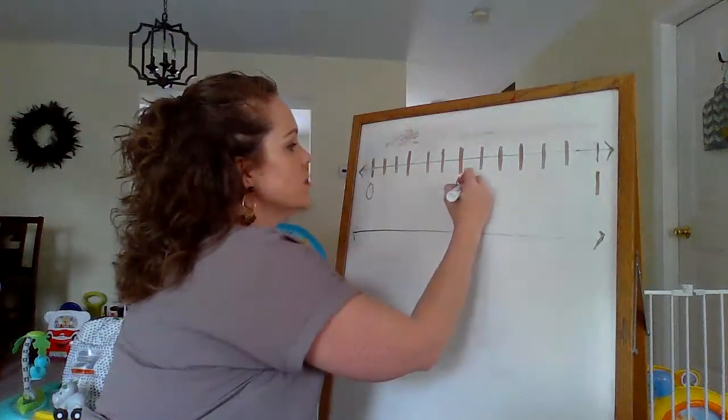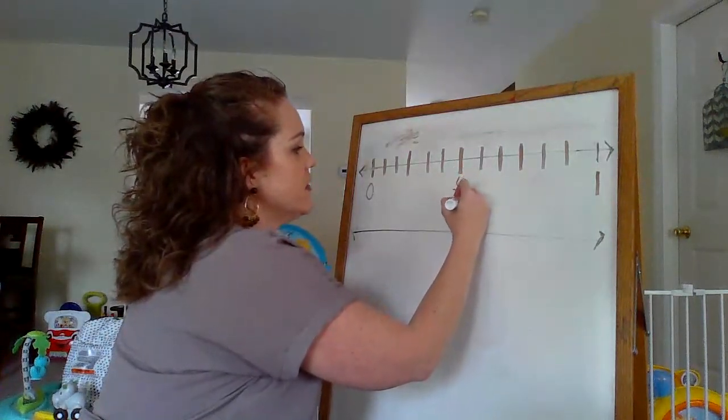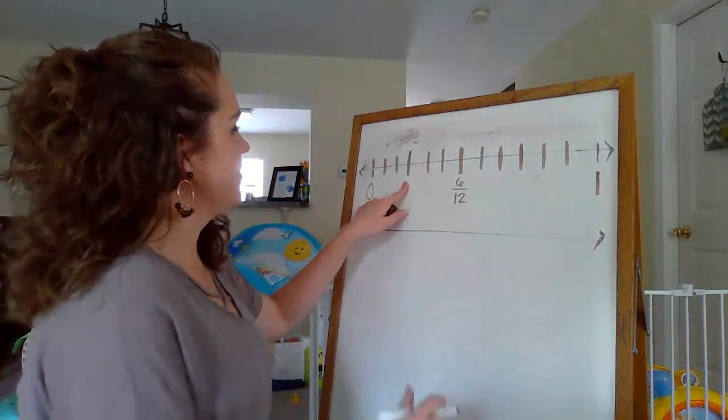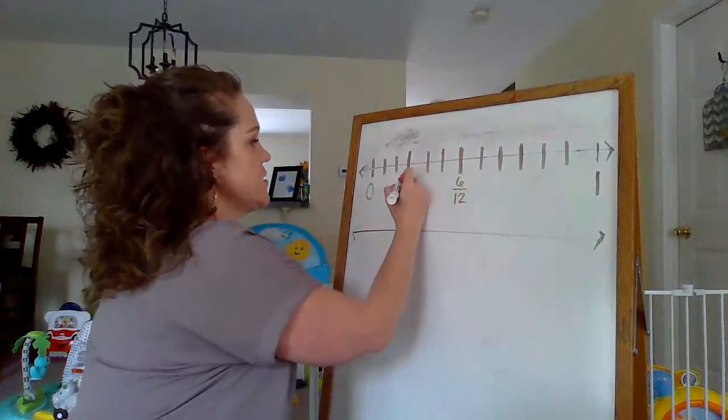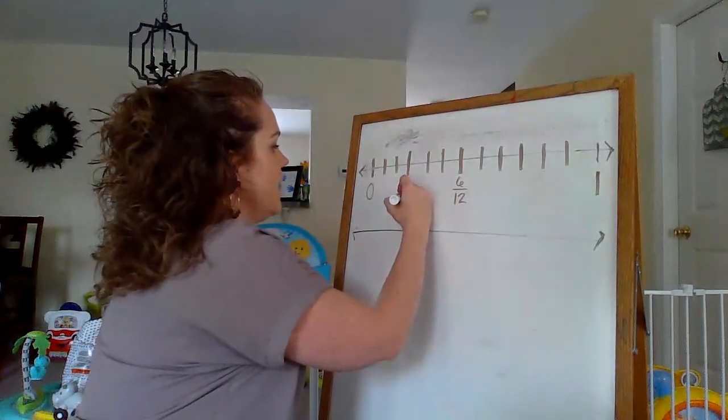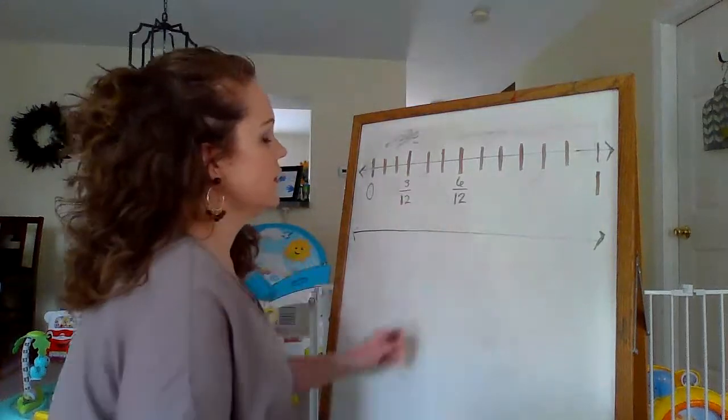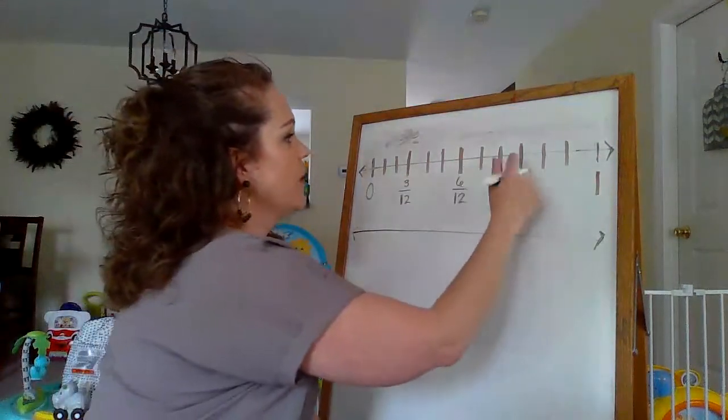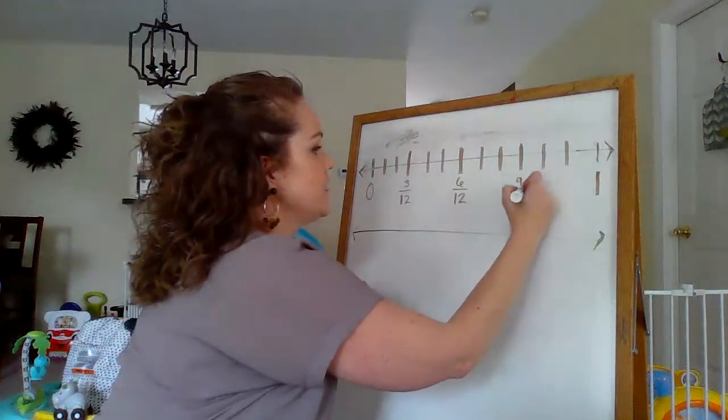So this would be 6 twelfths. And then to help a little more, I kind of eyeballed it, and I did half of this, because half of 6 is 3. So I did 3 twelfths. And then since I know that halfway between 6 and 12 is 9, I did my halfway mark here, and I did 9 twelfths.